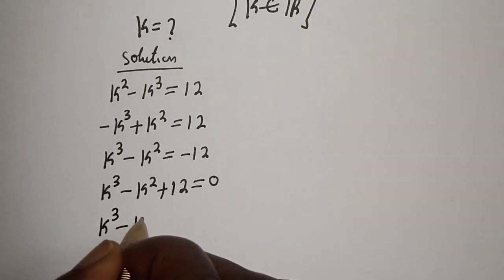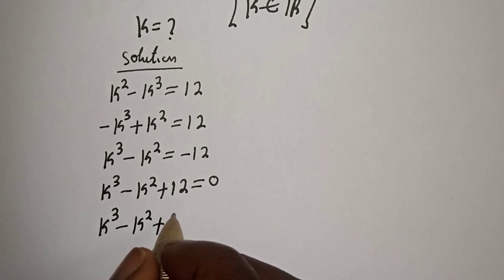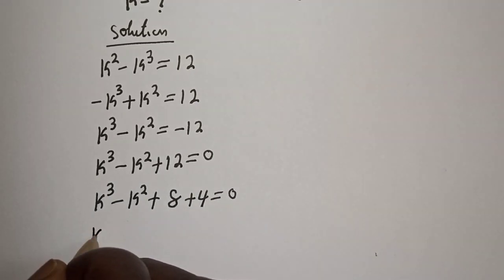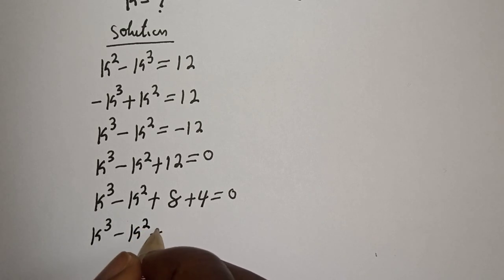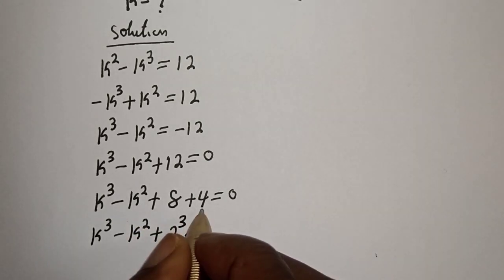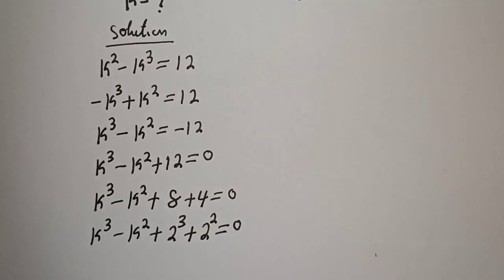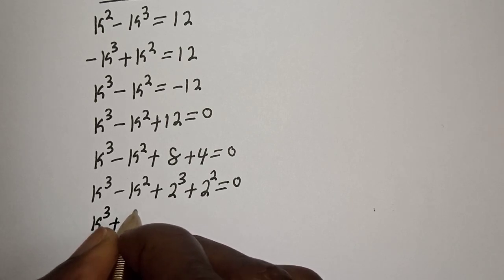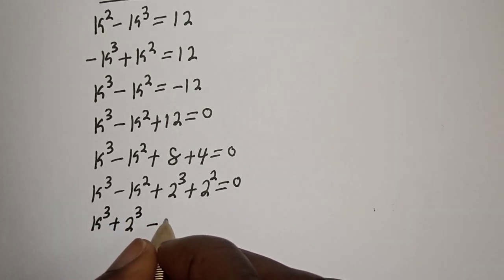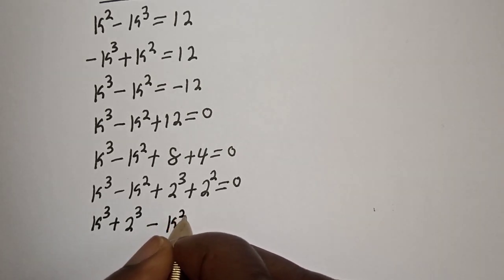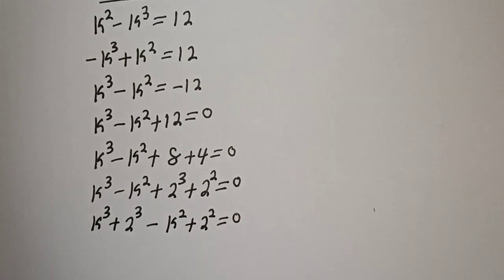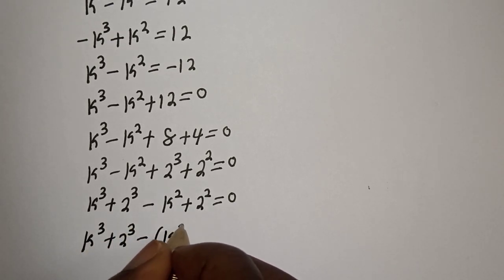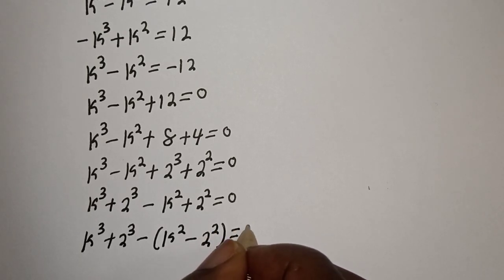k raised to power 3 minus k squared plus 12 can be written as 8 plus 4 is equal to zero. k raised to power 3 minus k squared plus 8, where 8 can be written as 2 raised to power 3, and 4 is 2 squared, is equal to zero. So we have k raised to power 3 plus 2 cubed, minus k squared minus 2 squared, is equal to zero.